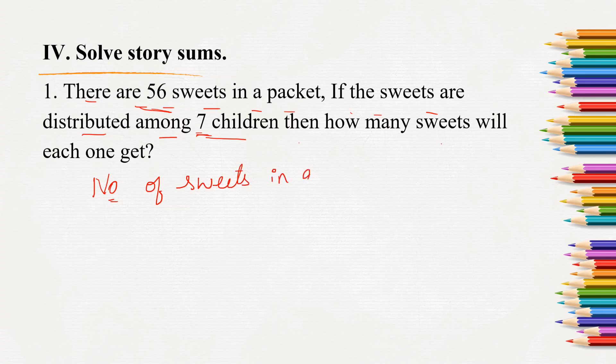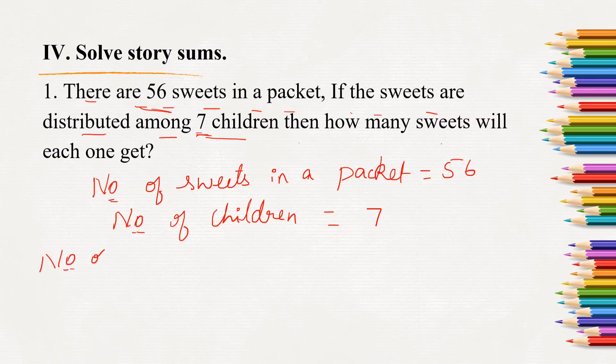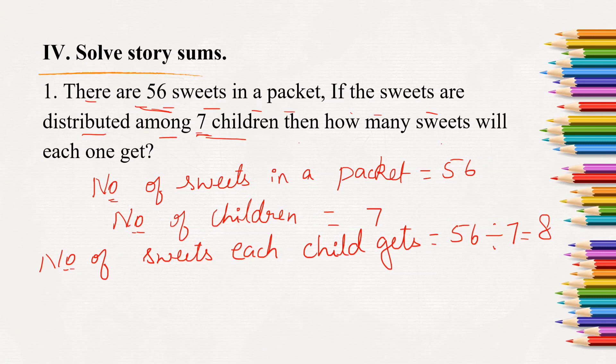So first we will write number of sweets in a packet, number of children are 7. Number of sweets in a packet 56, number of children 7. Number of sweets each child gets equals 56 divided by 7. 7 what times is 56, is it divisible exactly? Yes, 7, 8 times is 56. So here we can say each child gets 8 sweets.